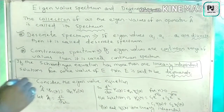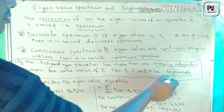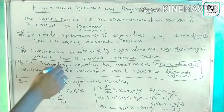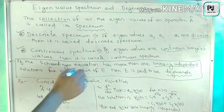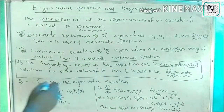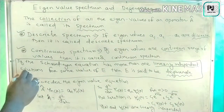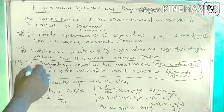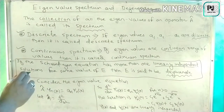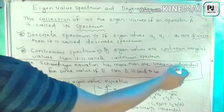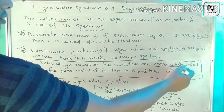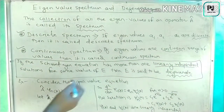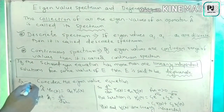There is another thing: degeneracy. What is the meaning of degenerate? If we take a condition equation and it has more than one linearly independent solution — we get two different solutions that are not dependent on each other — then this is called degenerate.